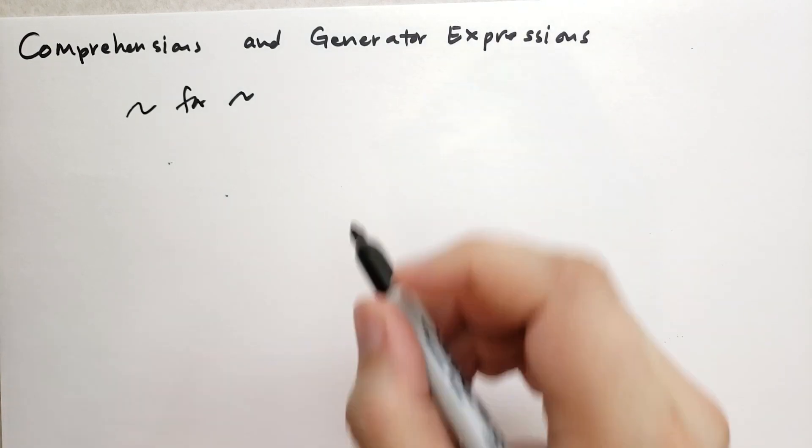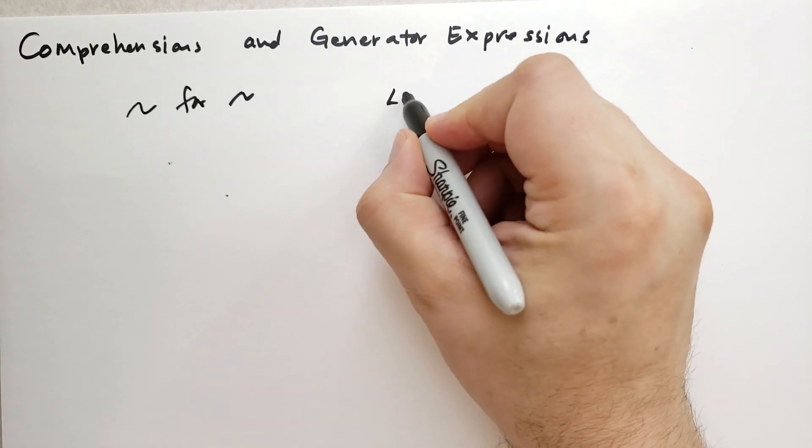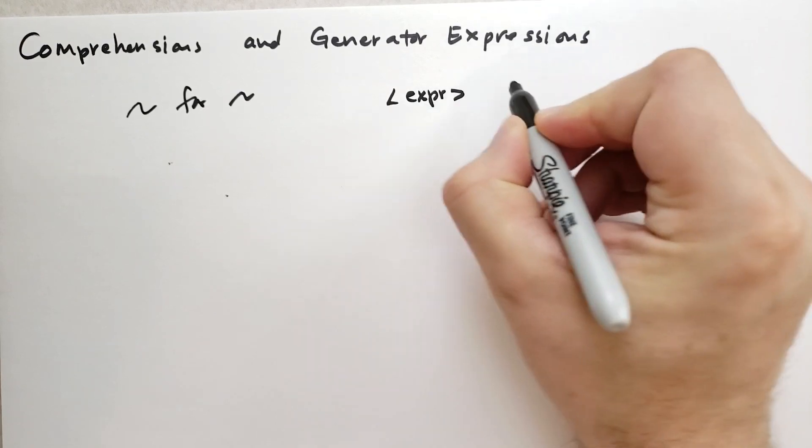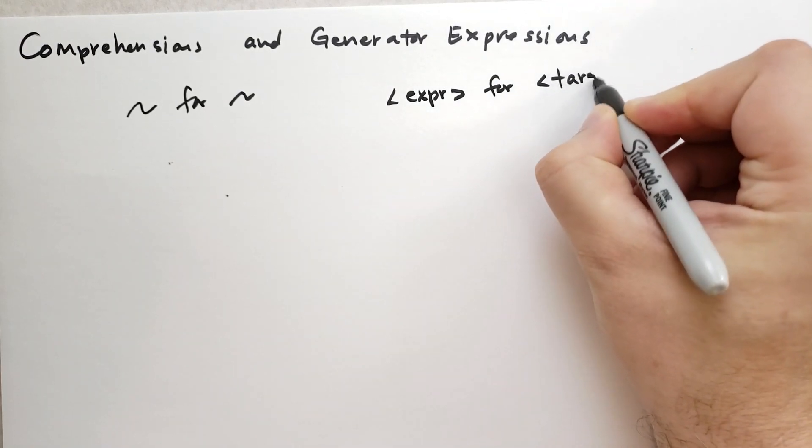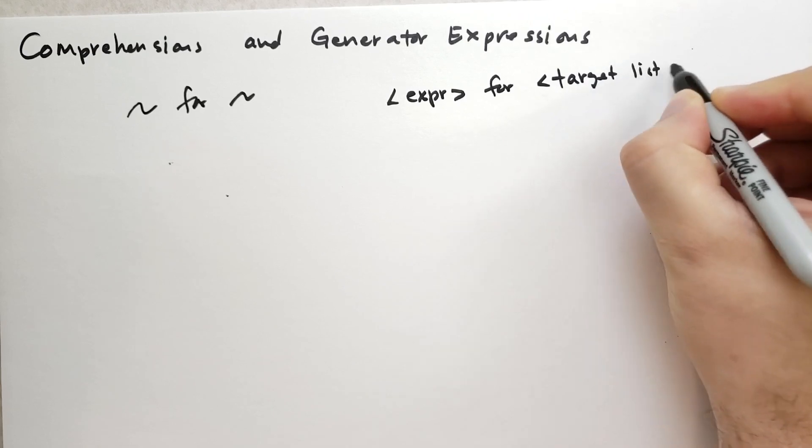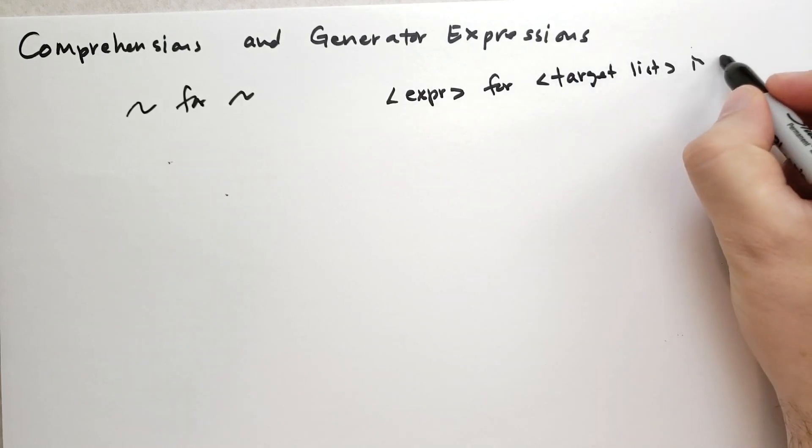The simplest syntax for the comprehension is as follows: we have expression for a target list in some expression list.